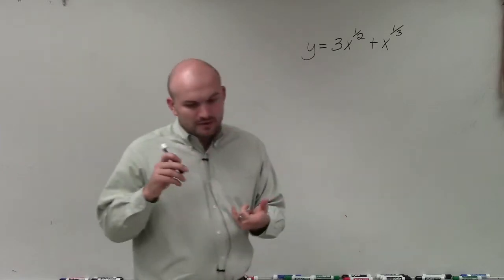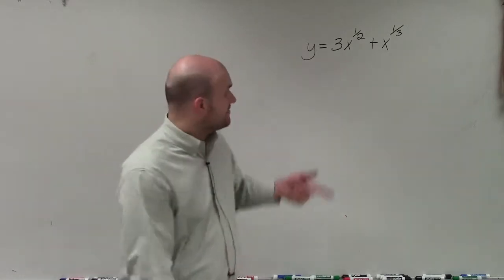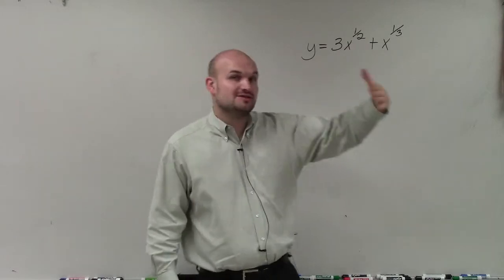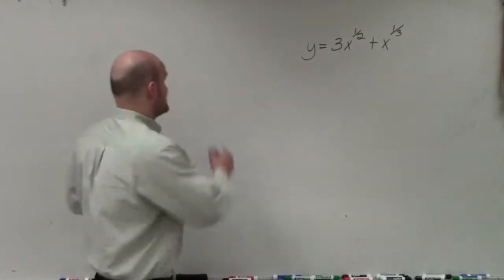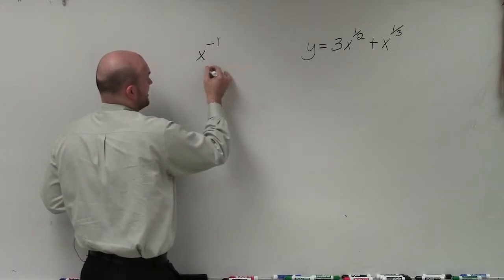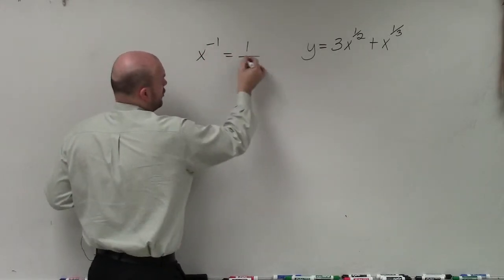One, we cannot have any negative exponents or any negative powers. So we look here, we have no negative powers, but also going with negative powers is variables in the denominator. Because x to the negative first is the same thing as 1 over x, all right?